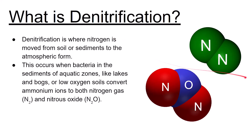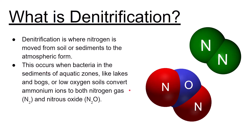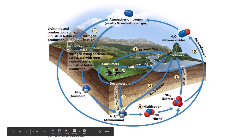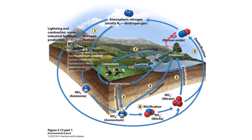Denitrification is where nitrogen in the ground soil or within the sediments of aquatic zones like lakes and bogs is converted back into nitrogen gas in the form of N2 or nitrous oxide (N2O), which is a significant air pollutant. Bacteria convert ammonium ions into nitrogen gas and nitrous oxide, which are released back to the atmosphere.